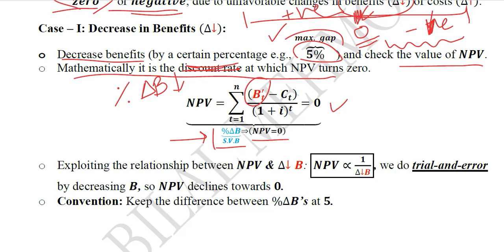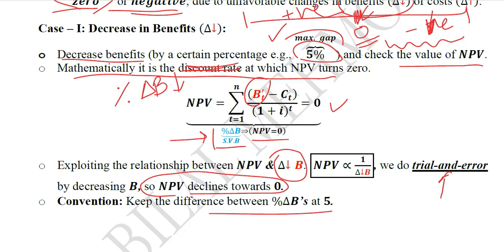By exploiting the relationship between NPV and the decline in benefits, we can arrive at the value of NPV which is going to be close to 0. We decline the benefits in such a way that the NPV reduces to 0 or close to it. Afterwards, we do trial and error using a couple of values — that is, the lower change and the higher change — which will be used in the interpolation formula. The difference between them is to be kept at maximum 5.